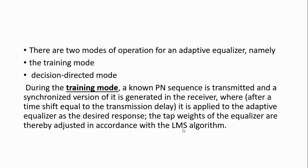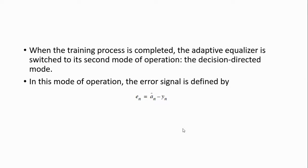There are two modes of operation in the adaptive equalizer: training mode and decision-directed mode. In training mode, a known PN sequence is transmitted and the synchronized version of its generator at the receiver is applied to the adaptive equalizer as the desired response. The weight of the equalizer is adjusted according to the LMS algorithm. When the training process is completed, the adaptive equalizer switches to the second mode of operation — the decision-directed mode. In this mode, the error signal is defined as E(N) = Â(N) − Y(N).